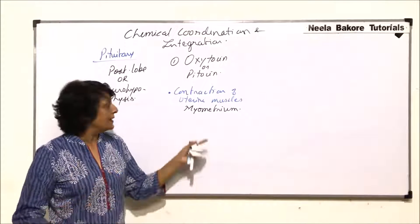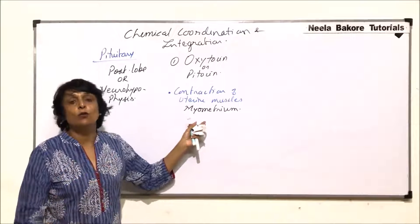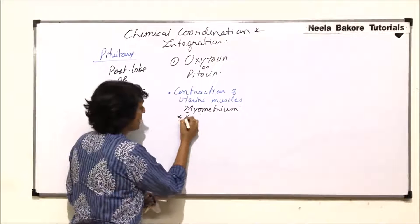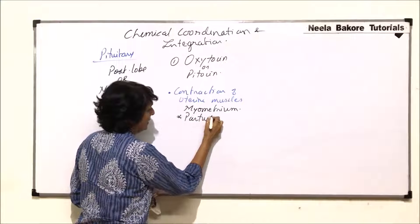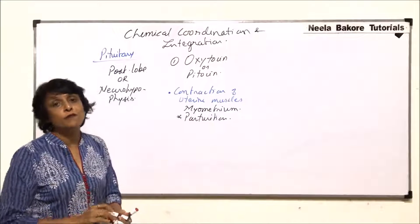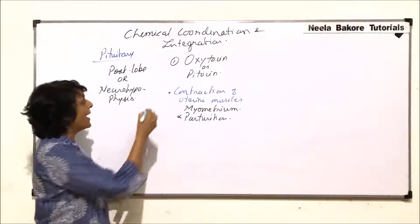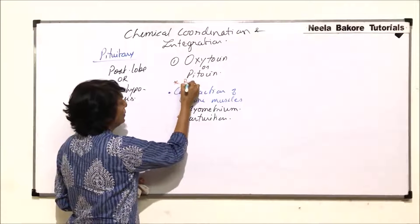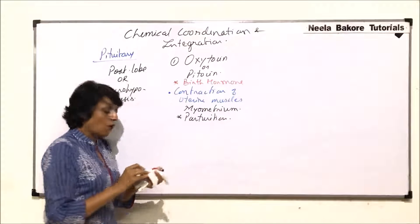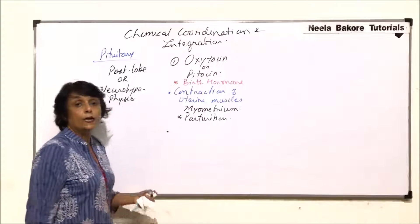Uterine muscles - that is the myometrium. When the myometrium contracts, the female is in labor. When the uterus contracts, the baby will be pushed out and parturition takes place. Basically it helps in parturition, expelling the fully formed fetus, and that is why oxytocin is also known as birth hormone.